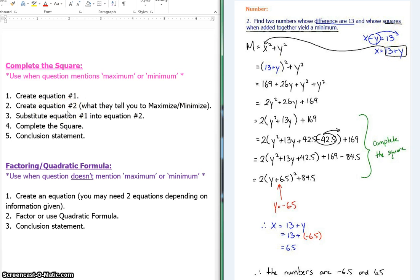Equation number two is created when they told you what to maximize or minimize. So they've actually told you the squares, when added together, yield a minimum. So the squares of each of the numbers, when added together, this will give you the minimum. This is the equation that we need to substitute the first equation into so that we get all of one letter. Then what we're going to do is expand into standard form, which ends right here, and we complete the square. So this is the entire process of completing the square.